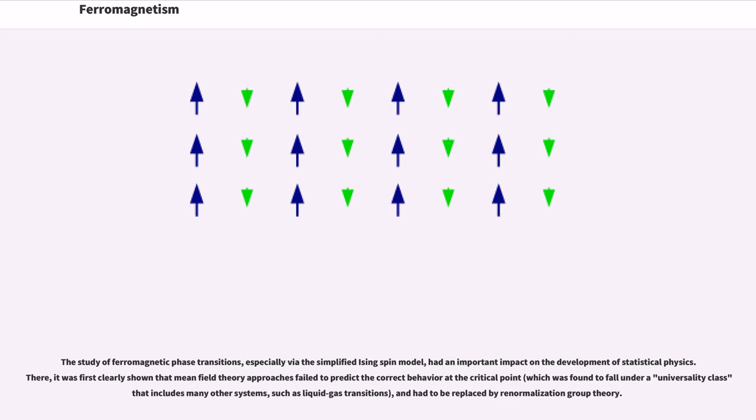There, it was first clearly shown that mean field theory approaches failed to predict the correct behavior at the critical point, which was found to fall under a universality class that includes many other systems, such as liquid-gas transitions, and had to be replaced by renormalization group theory.